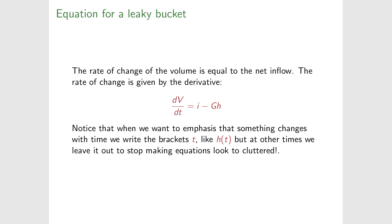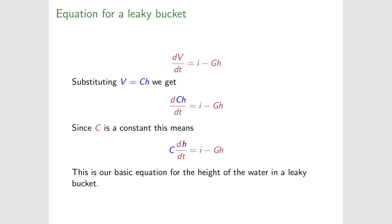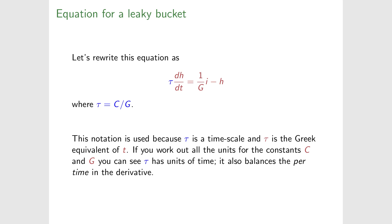Substituting V = C·h, we get C · dh/dt = i − G·h. For convenience, we divide across by G, so C/G · dh/dt = (1/G)·i − h. We call C/G the constant tau (τ), so the equation becomes τ · dh/dt = (1/G)·i − h. This makes later equations slightly easier to write.